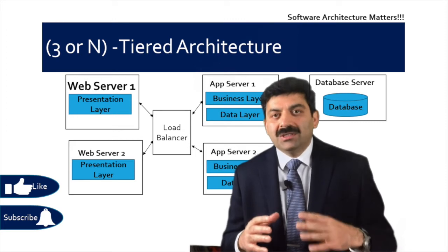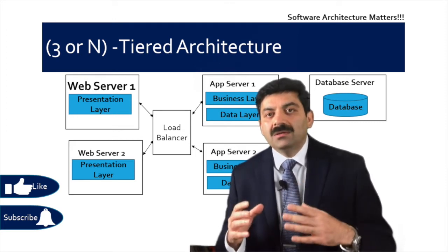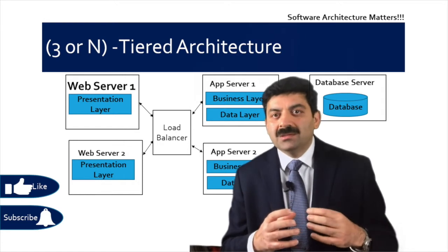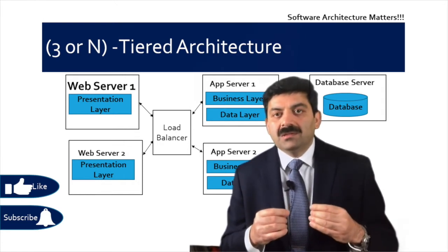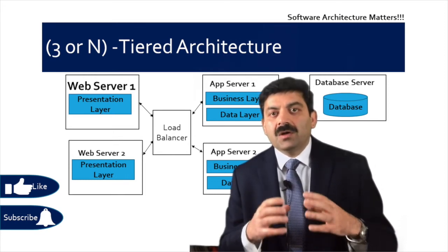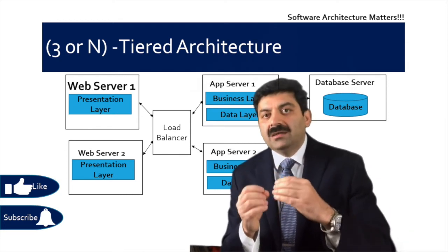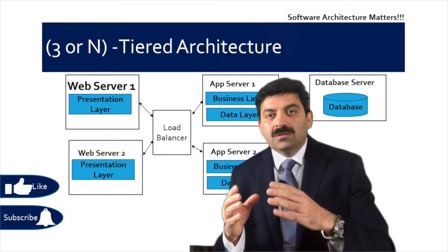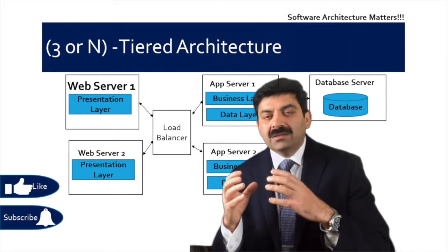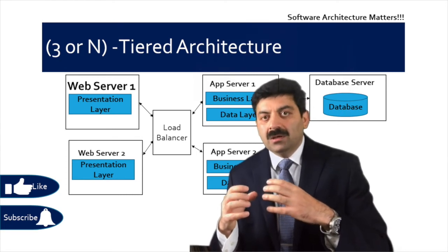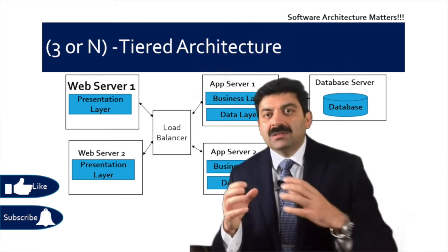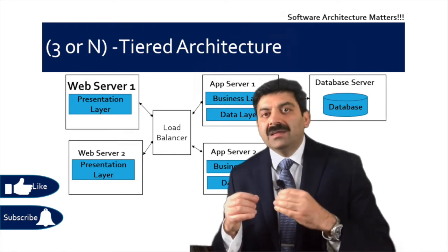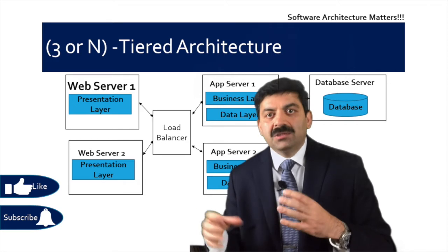Now let's come to three-tier or n-tier architecture. All the presentation layers are deployed on web servers — you may have multiple web servers, and generally these talk through a load balancer. They talk to application servers, where your business logic and data-access layer are deployed, so complex data processing doesn't bog down the web servers. Finally, these app servers talk to a database deployed on a database server.